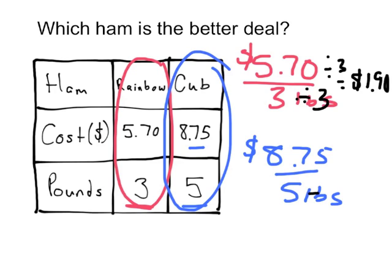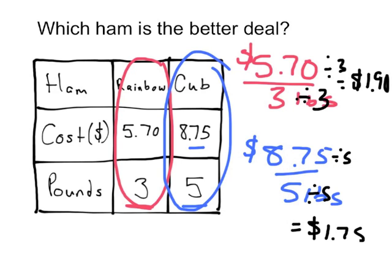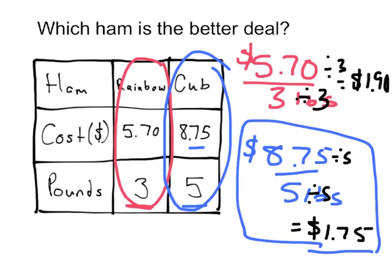Cub, we need to divide by five. And when I use my calculator, I see that it needs to be $1.75 per pound. So which one's the better deal? Hopefully you can tell that Cub, you're only paying $1.75 per pound. So that is the better deal.